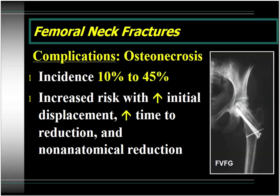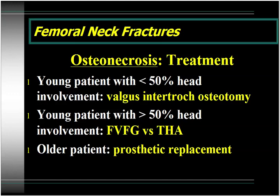Osteonecrosis as a complication of femoral neck fractures occurs anywhere from 10% to 45% in the literature. Factors associated with increased risk include increased initial displacement of the fracture, increased time between fracture and reduction, and obtaining a non-anatomical reduction. For a physiologically young patient with less than 50% involvement of the head, a valgus intertrochanteric osteotomy is the treatment of choice. For a young patient with more extensive head involvement, you can consider a salvage procedure such as free vascularized fibular graft or total hip arthroplasty. In an older patient, prosthetic replacement would be the treatment of choice.